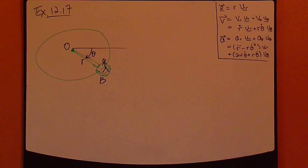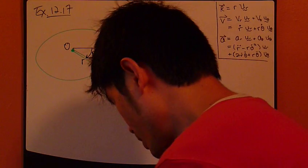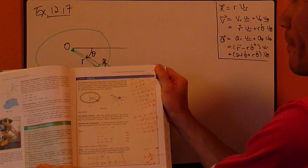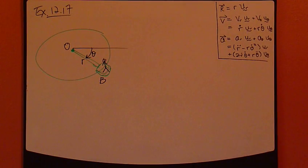Okay, let's look at an example for the radial transverse coordinate system. This is example 12.17 in the textbook, page 71.